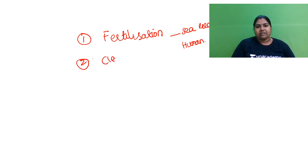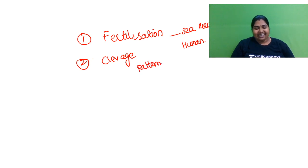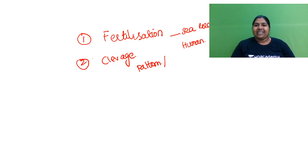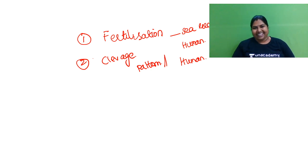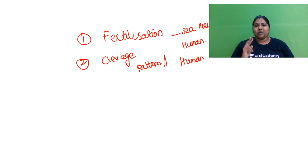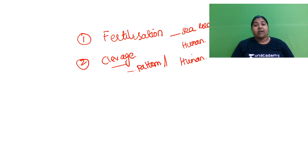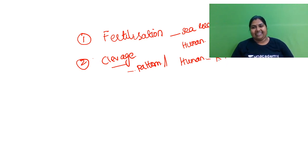The second important concept is cleavage, where you'll study the pattern of cleavage. For human, it is going to be holoblastic as well as rotational cleavage. Under cleavage you might get match-the-following questions on what sea urchin, tunicate, and C. elegans do — so just make a mini table, that will be enough.